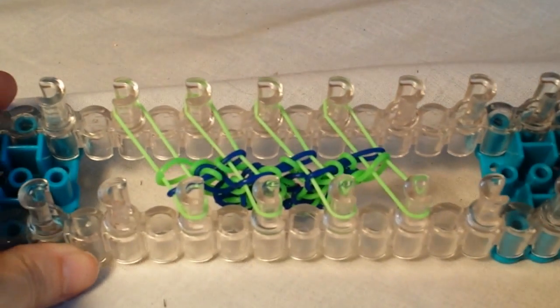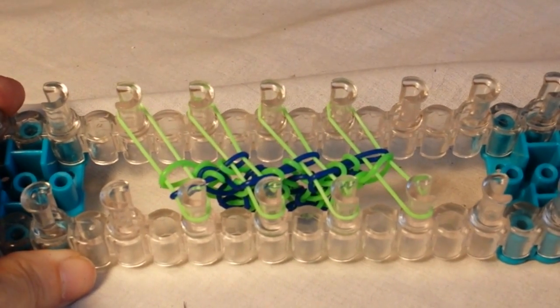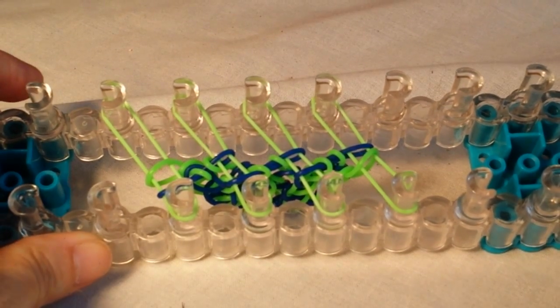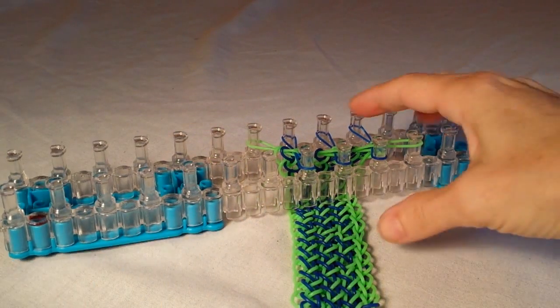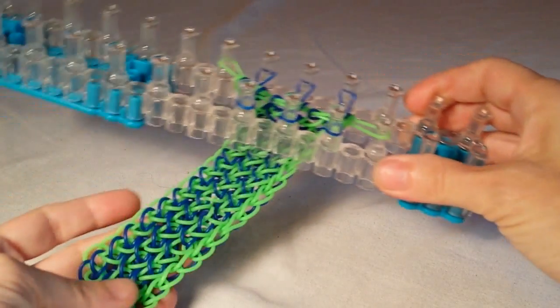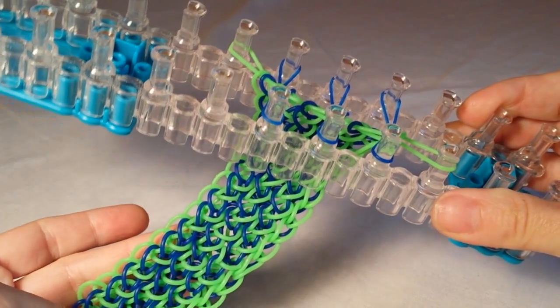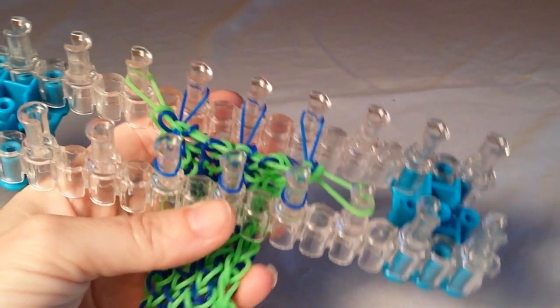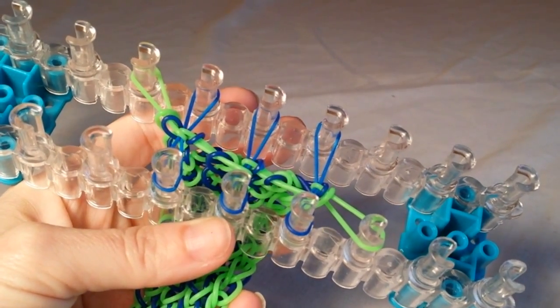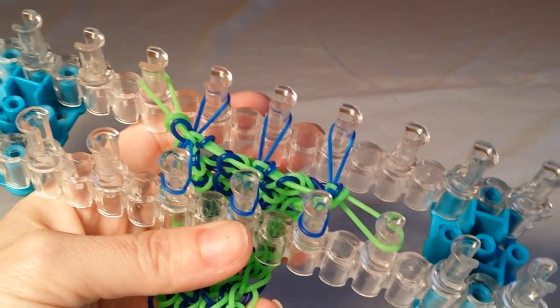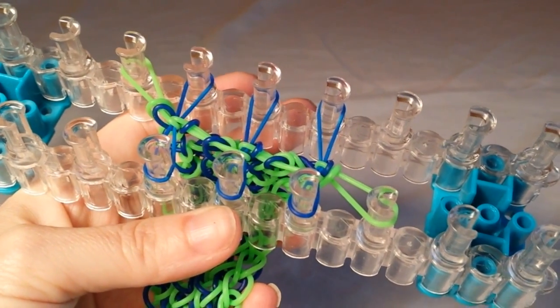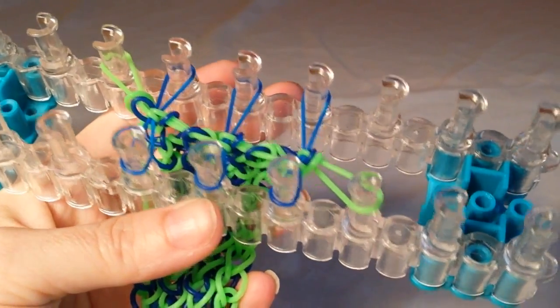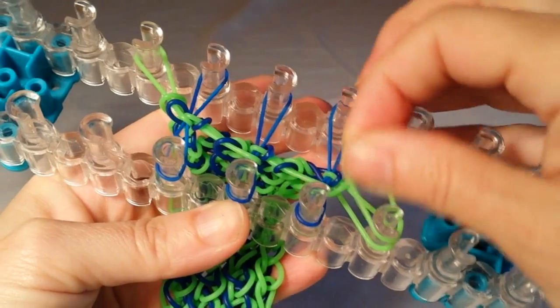Alright, and since we're just repeating the same pattern over and over, I'm going to pause and I'm going to go back and finish it up and come back and show you how to take it off the loom. Okay, I have this almost long enough for my wrist, so I'm going to do a few more rows here and then I'm going to show you how to take it off.